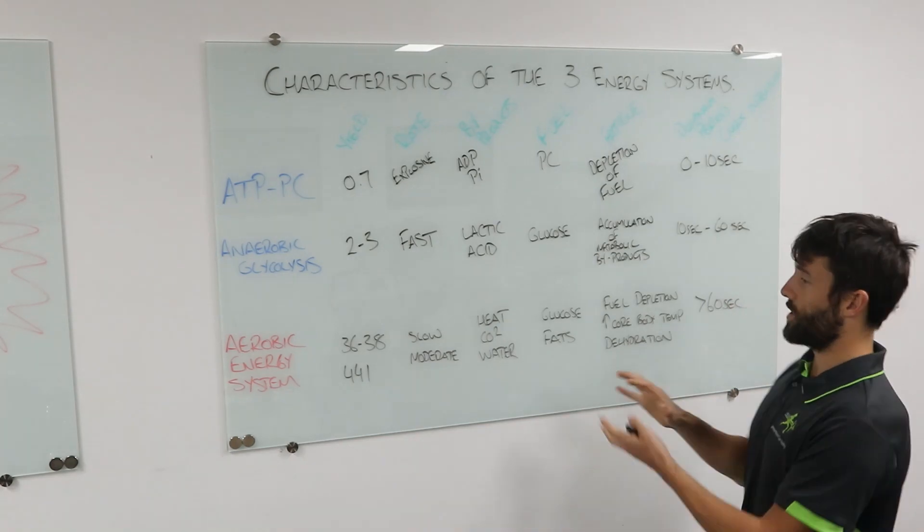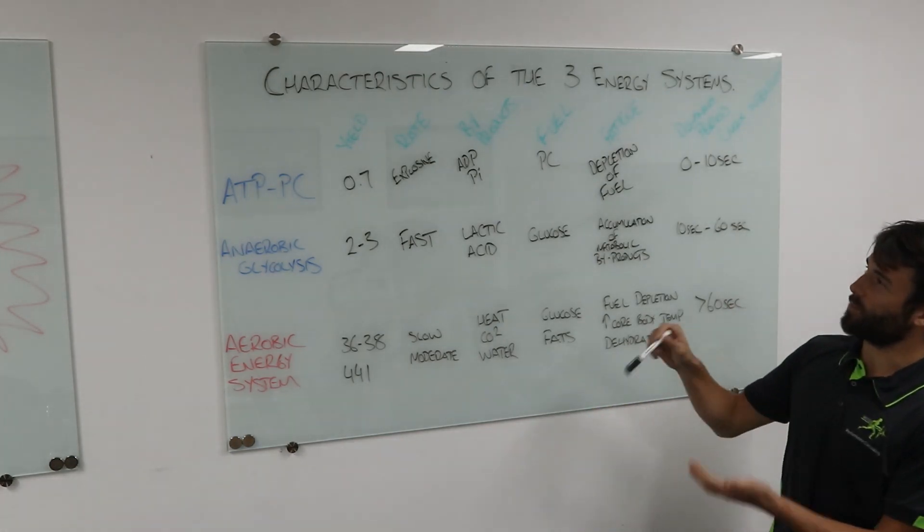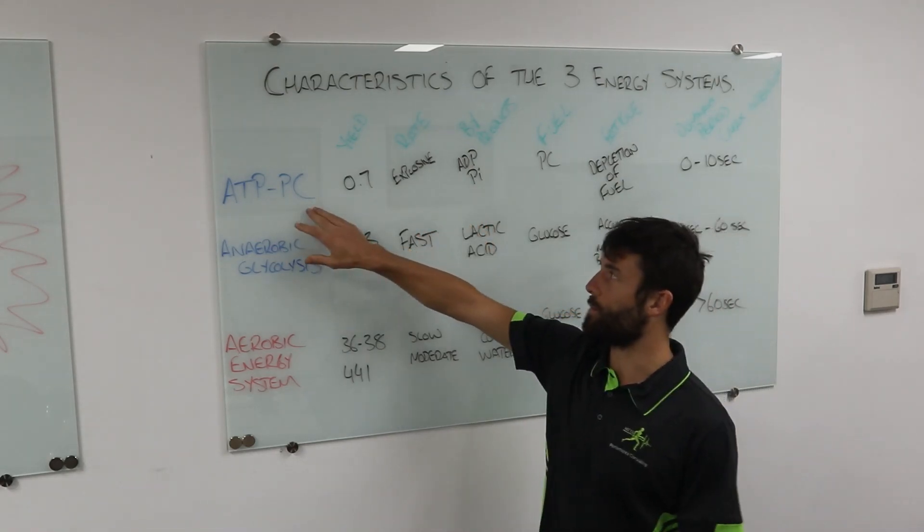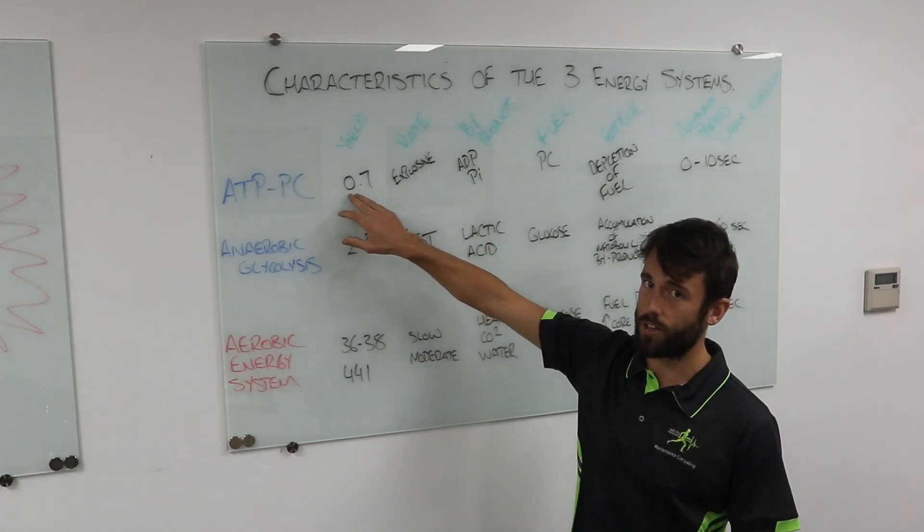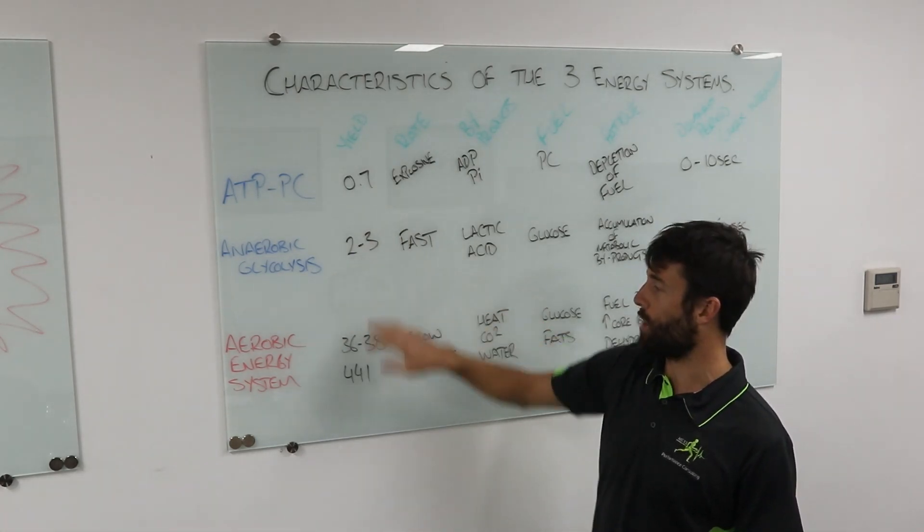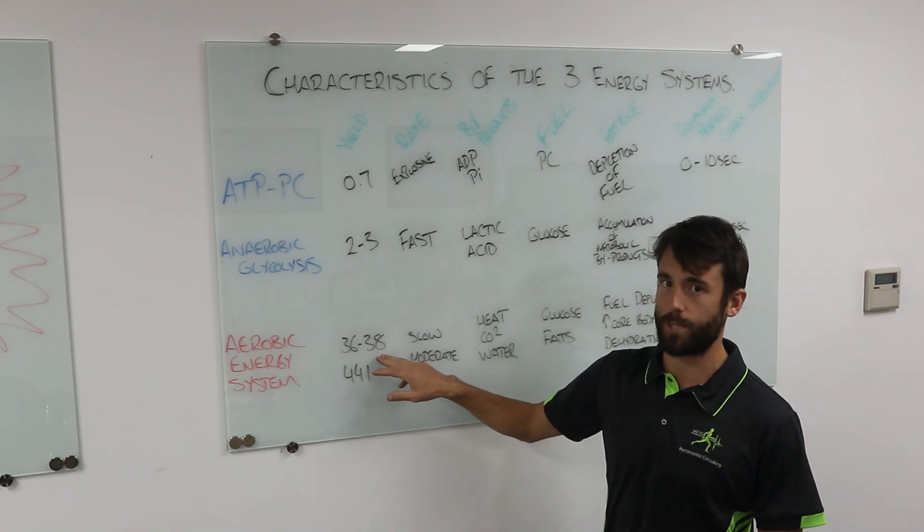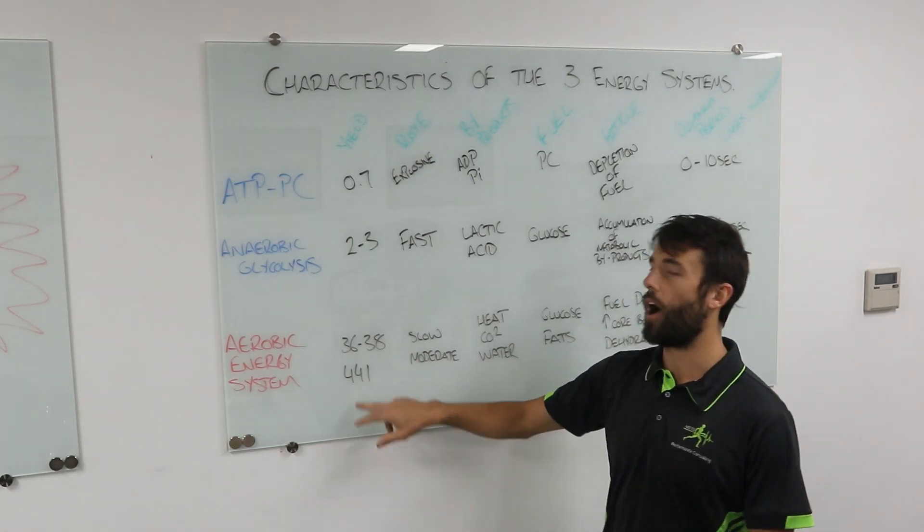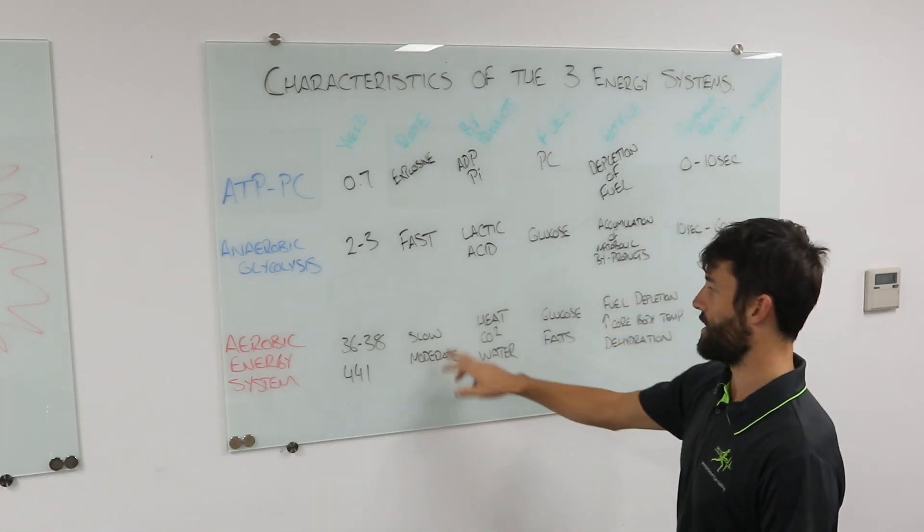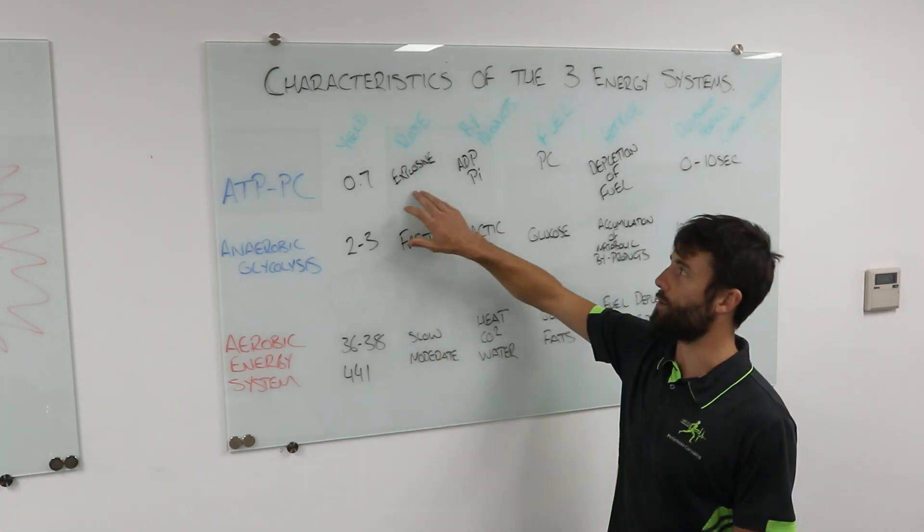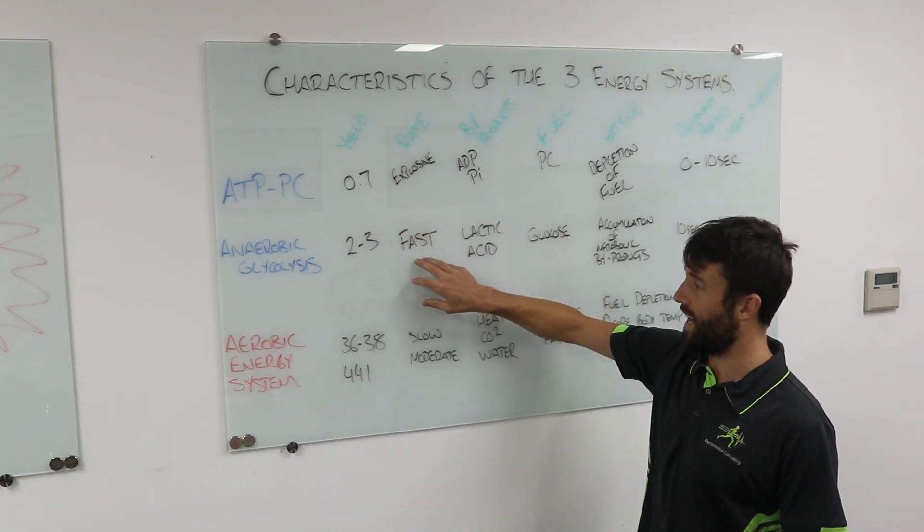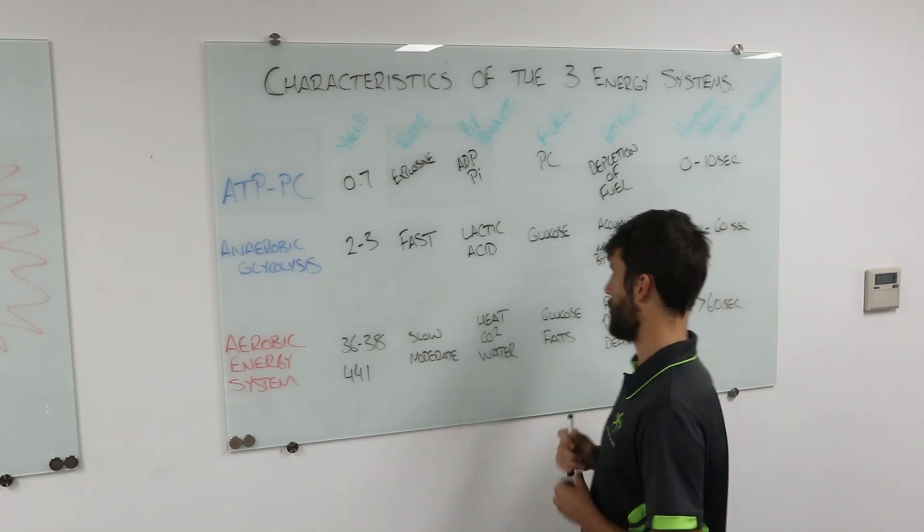That's basically it. We just wanted to do some nuts and bolts today. Some questions we've seen talk about our yield, so it's important to realize that the ATP-PC has the smallest yield per molecule. Breaking down glycogen anaerobically, a bit more. Breaking it down aerobically, we get a complete breakdown, so we get a lot more energy. Fats have the highest amount of ATP per molecule. Problem is they are very slow. So in terms of the rate of production, ATP-PC clearly the fastest. Anaerobic glycolysis is still fast, and our aerobic system is the slowest. We could say slow or moderate.